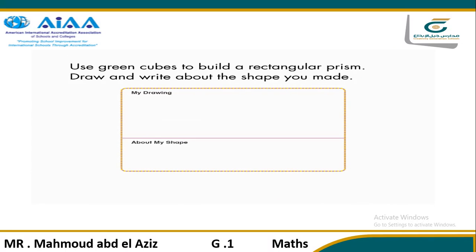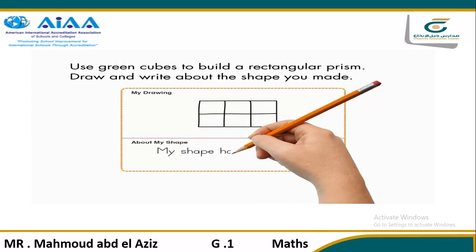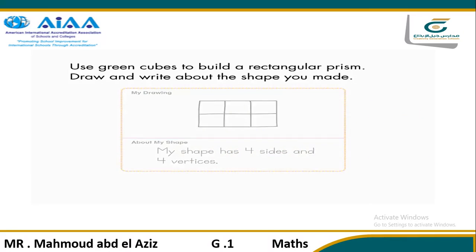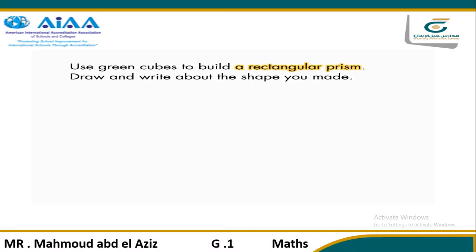This problem is key because students combine three-dimensional shapes — cubes — to form another three-dimensional shape: a rectangular prism. Listen and look for students who build a rectangular shape with one layer of cubes. Because it has only one layer of cubes, some of these students may think of it as a two-dimensional shape. They draw the top view of the shape and include the number of sides and vertices in their drawing when they write about their shape. Call the attention of these students to the shape named in the problem: a rectangular prism.